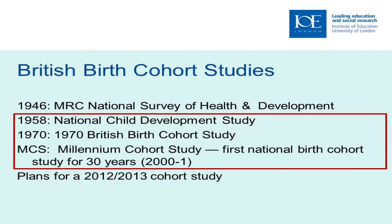In terms of the national birth cohort studies, there are four existing studies and the ones outlined in red are the ones we look after at the Centre for Longitudinal Studies. There are now firm plans for a 2012–2013 cohort study led by Carol Deseter at the Institute of Child Health. These three at CLS are all funded by ESRC, and it's quite funny that the 1958 study is still known as the National Child Development Study given that these people are now in their mid-50s.